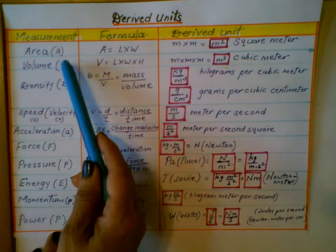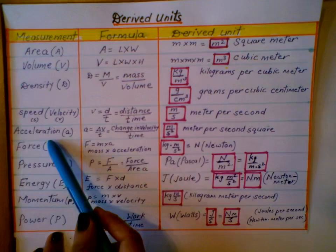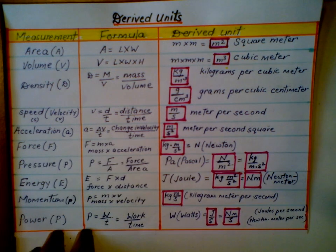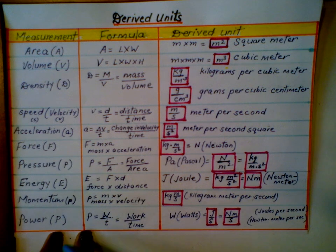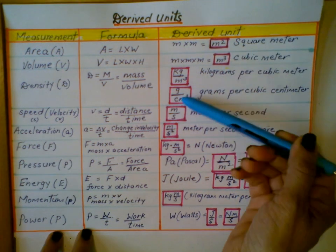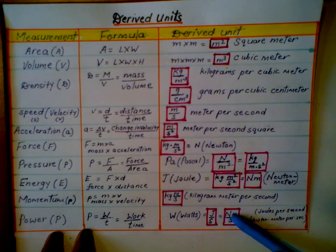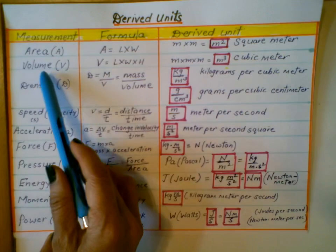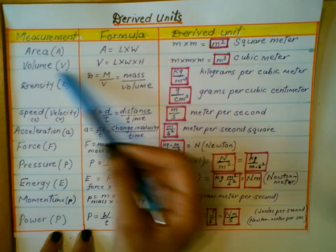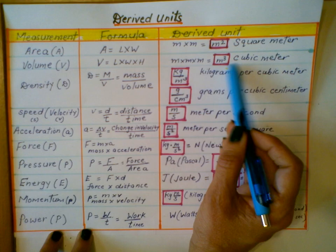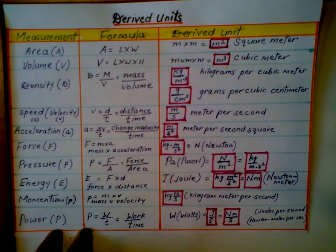Similarly, we have volume, density, speed, velocity, acceleration, force, pressure, energy, work, momentum, and power. All of these units are derived units derived from the seven SI base units. For volume, besides meter cubed, liter is another unit when we talk about the volume of liquids. But that's also a derived unit.